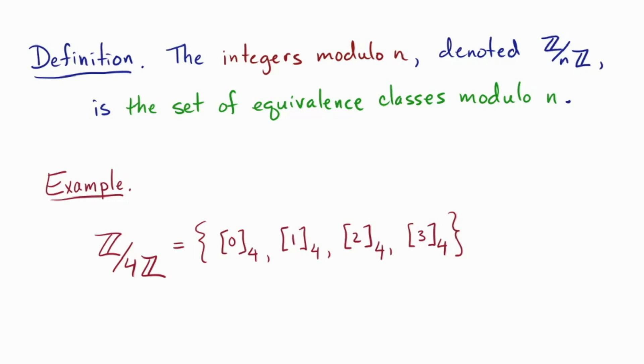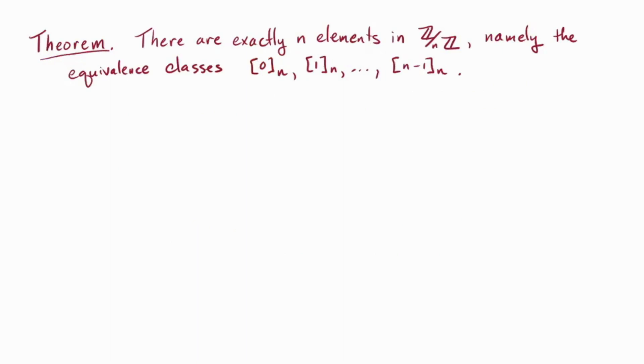Now, I just asserted that mod 4 we get these four equivalence classes and nothing else. Of course, in general, that needs proof. Theorem. There are exactly n elements in Z mod nZ, namely the equivalence classes 0, 1, and so on up through n minus 1.